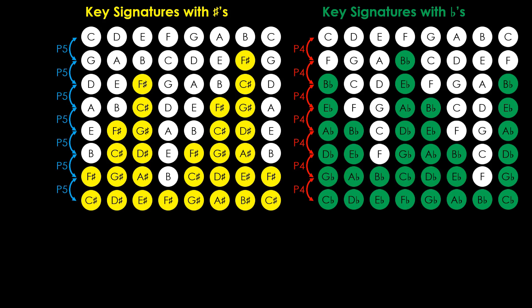Adding a perfect fourth gives C-flat major, which has seven flats. Adding another perfect fourth gives F-flat major, which has a B-double-flat instead of a B-flat.